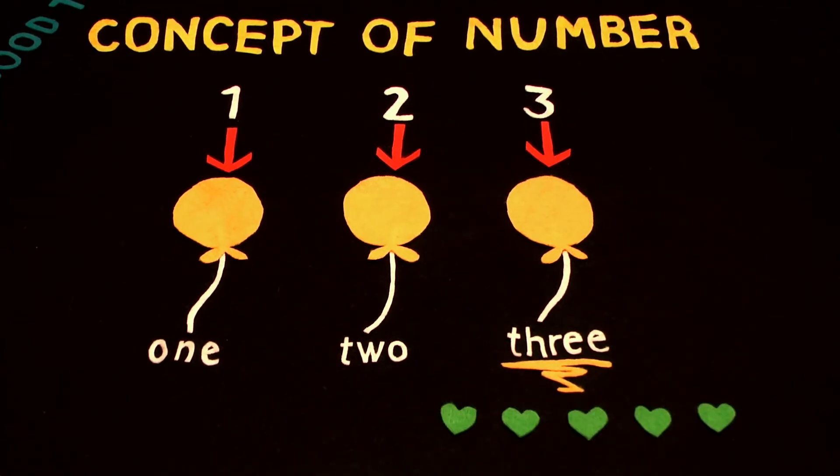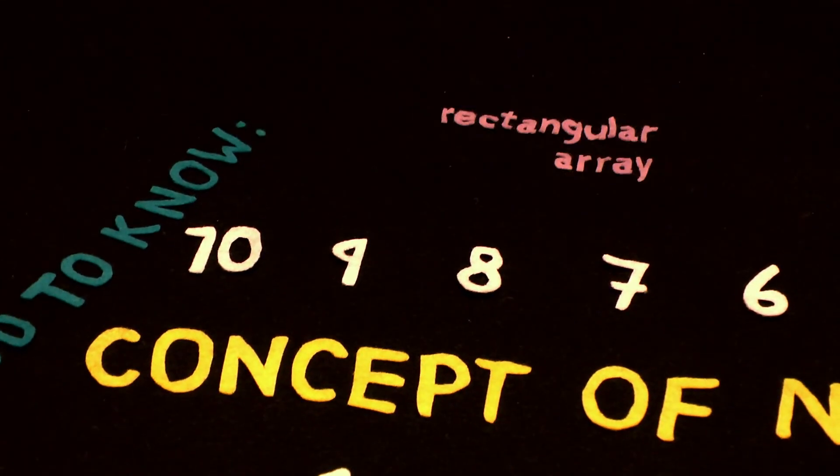your child will be able to count up to 10 things arranged in a line and 10 things arranged in a rectangular array.